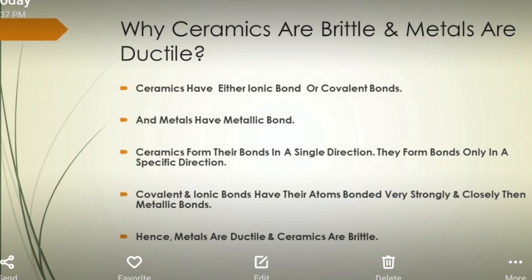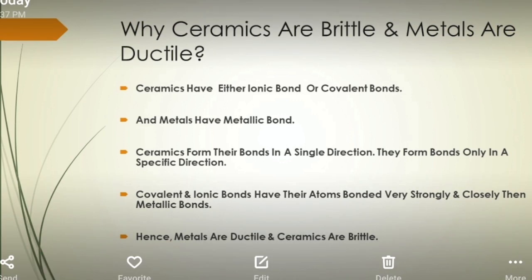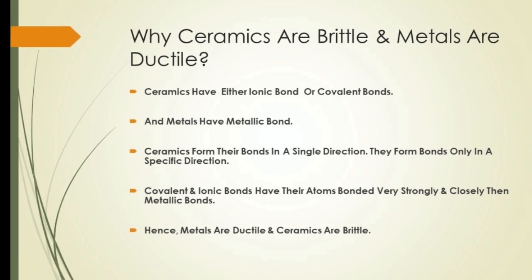Is liye jo ceramics hain woh zyada brittle hote hain. Ceramics form their bonds in a single direction — they form bonds only in a specific direction. Covalent aur ionic bonds mein jo atoms hain woh bahut strongly aur closely packed hote hain metallic bonds se. Is liye metals jo hain woh ductile hain aur ceramics are brittle.